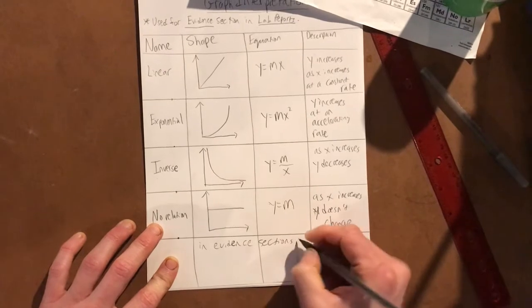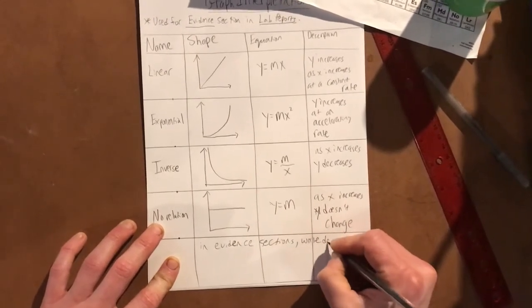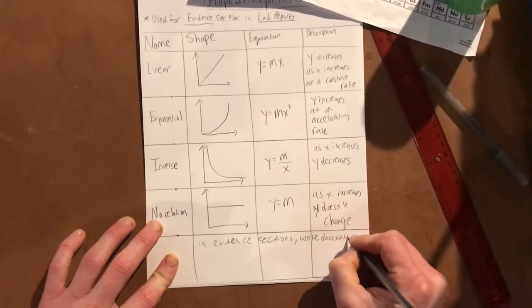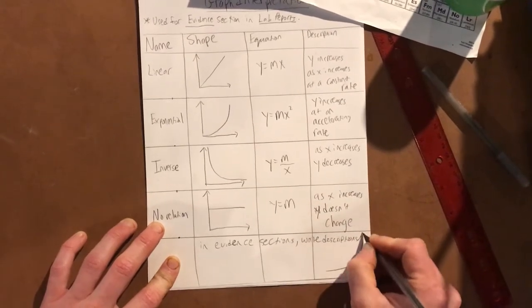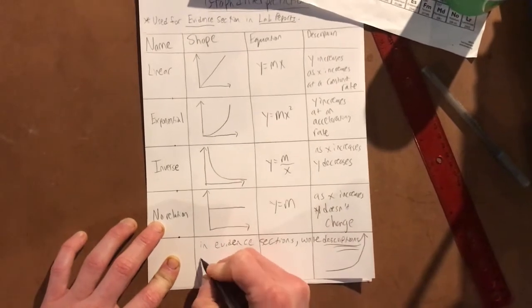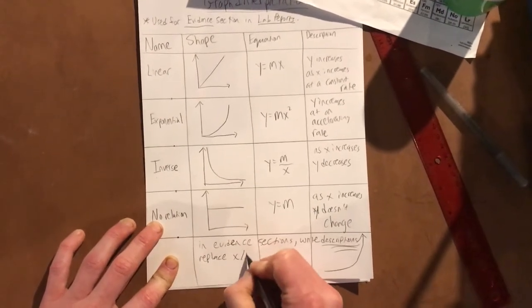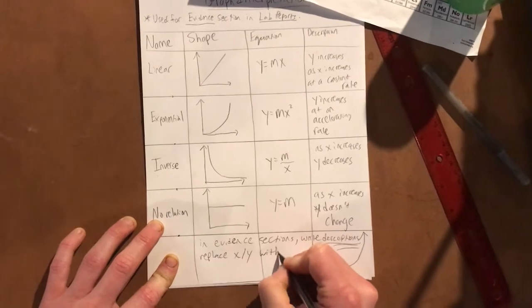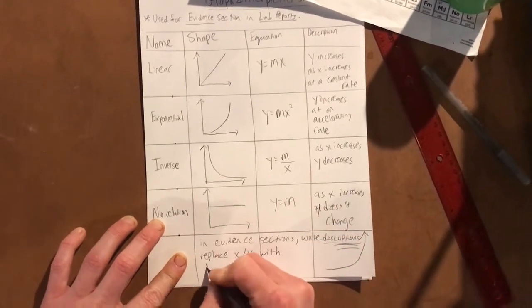So we should write down: in evidence sections from now on, write descriptions—they're right there in that column—but replace x and y with different variables.